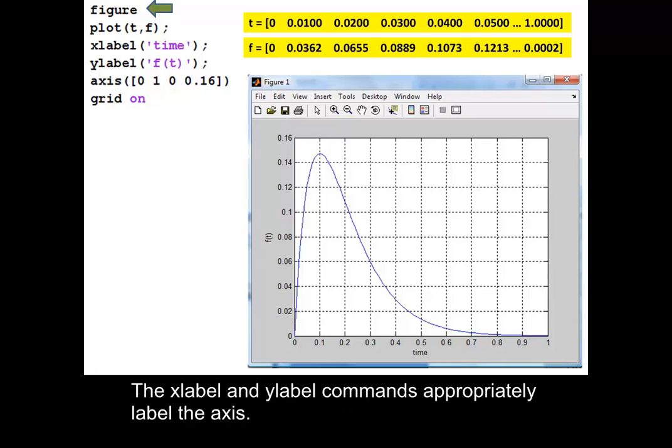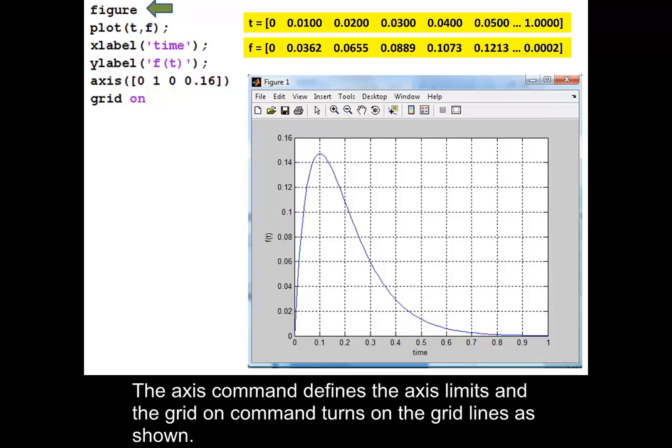The xlabel and ylabel commands appropriately label the axes. The axis command defines the axes limits and the grid on command turns on the grid lines as shown.